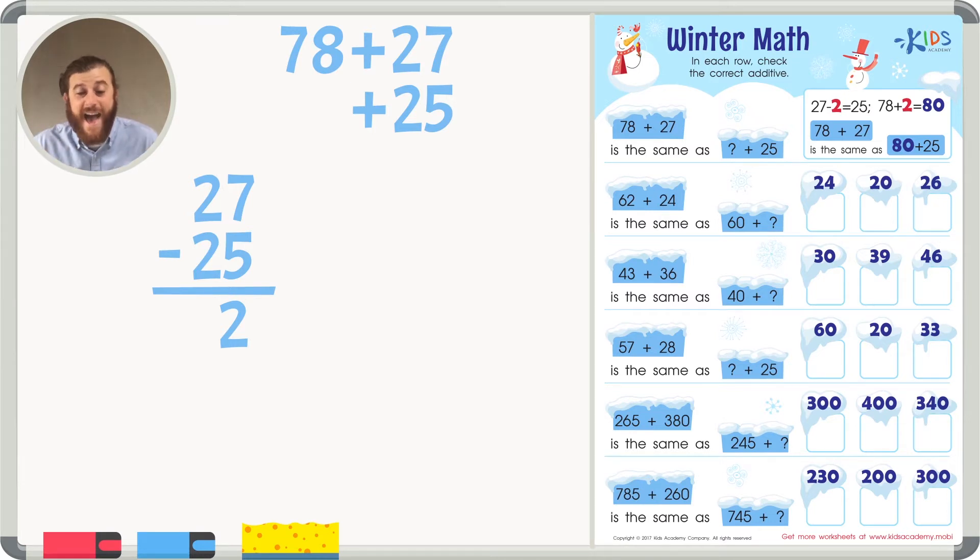So if you took away 2 from 27 to make 25, you're going to have to add 2 to the other number, 78, to make it the same answer. This is called balancing equations. So let's go ahead and add 78 plus 2, and that will give us an answer of 80.